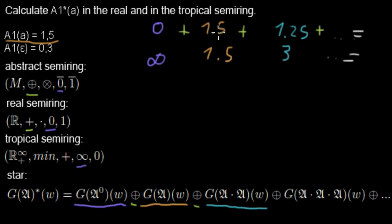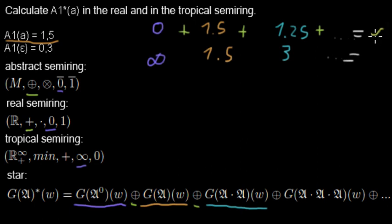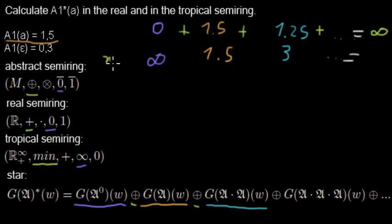As you can see, all of the weights will be greater than 1, so when I always add them to each other I will end up with an infinite weight for A-star in the real semi-ring.